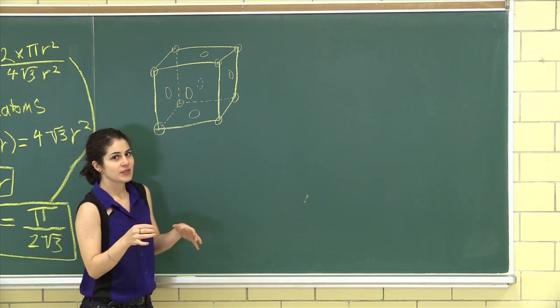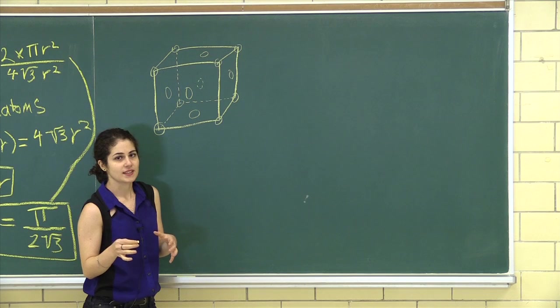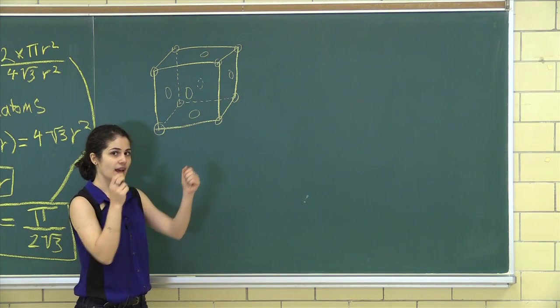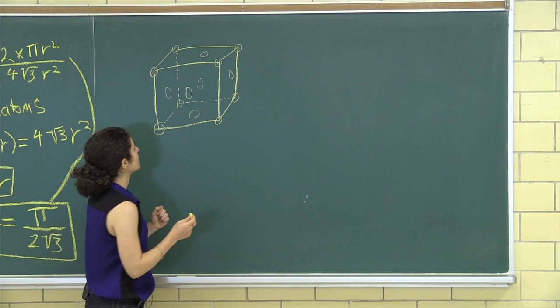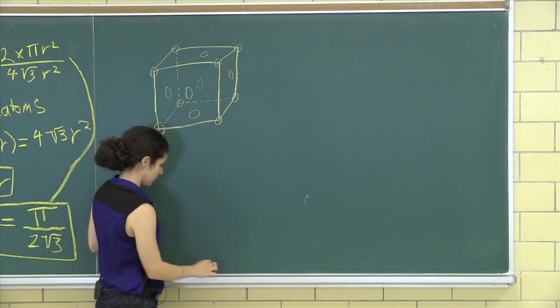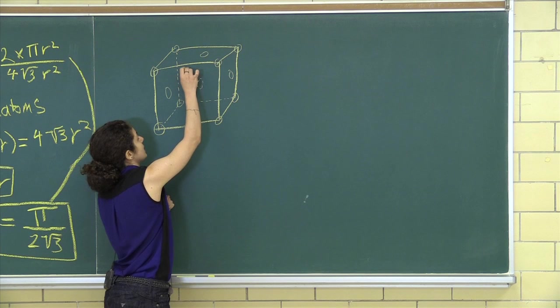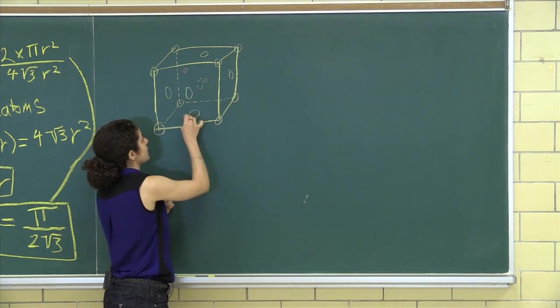But what's happening is in diamond cubic, just like in zinc blend, you have two atoms on the top and two atoms on the bottom. So if I were to draw it with a different color, it would look like this one here and this one here.